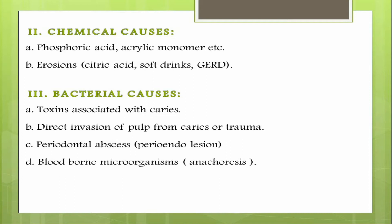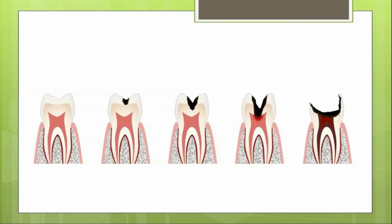Another reason is blood-borne microorganisms resulting in anachoretic pulpitis, which will be discussed in another video. The most common cause is invasion of the pulp from caries. Caries usually starts from the enamel and then progresses further to involve the dentine, at which stage the patient usually experiences toothache.